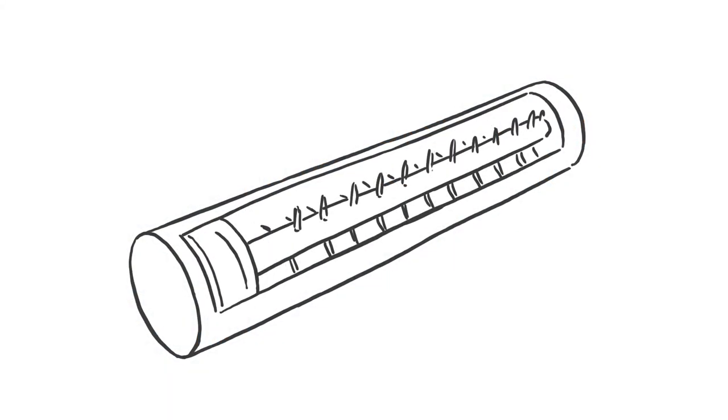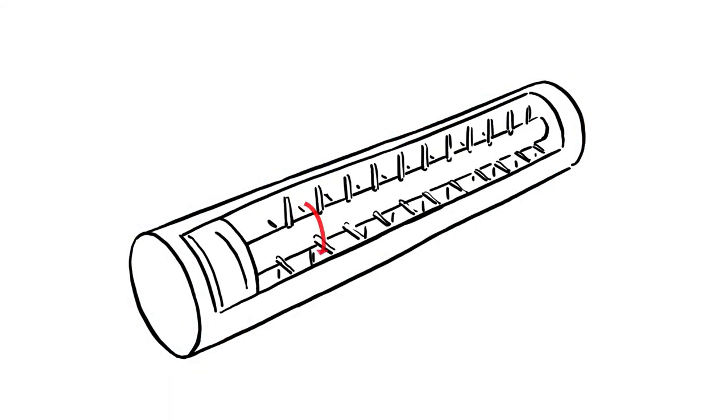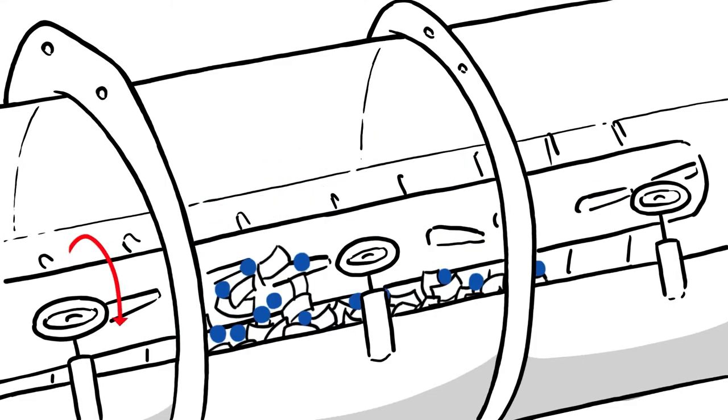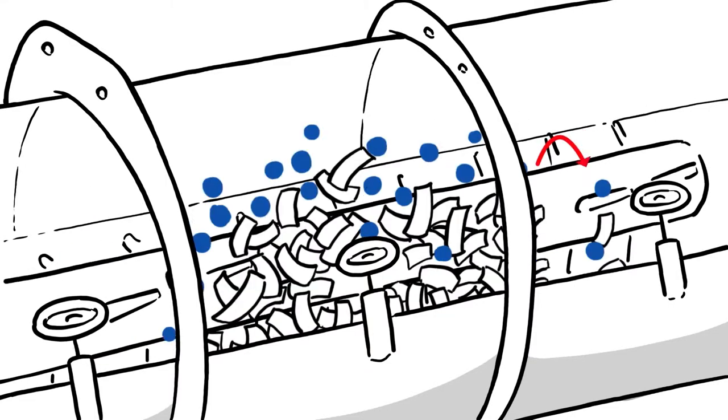In the conventional gluing process during particle board production, the particles are combined with glue in a mixer. Distribution of the relatively large drops of glue on the particles is not optimal.